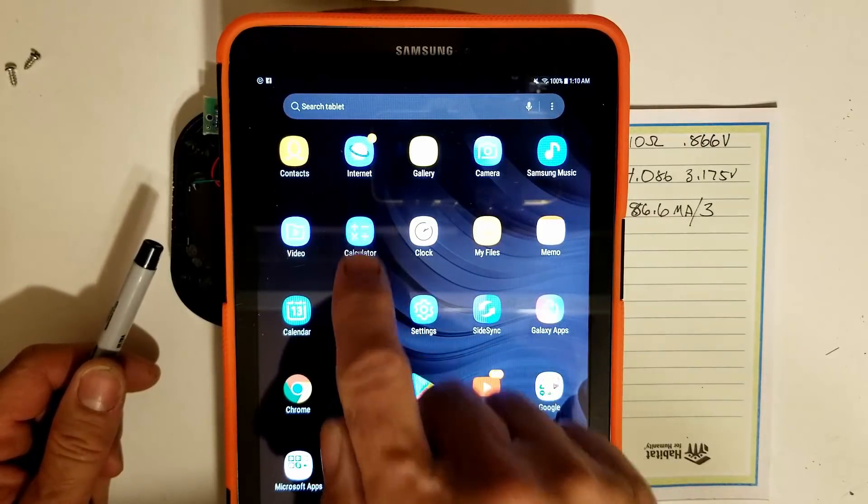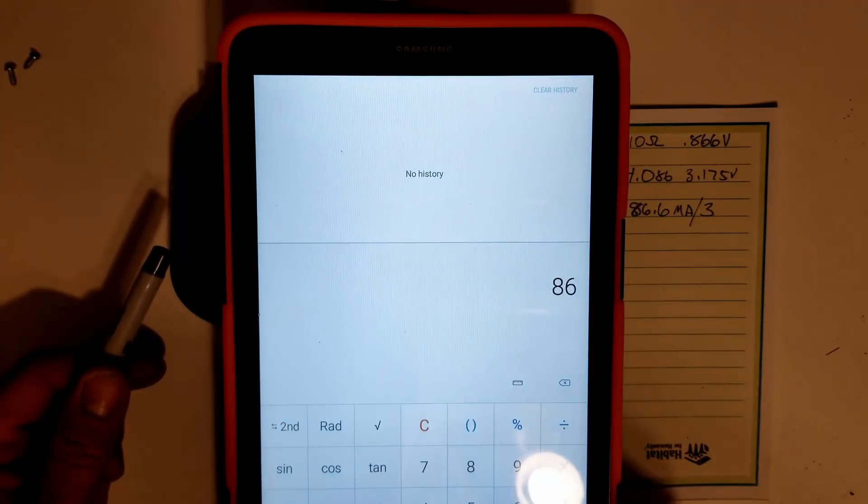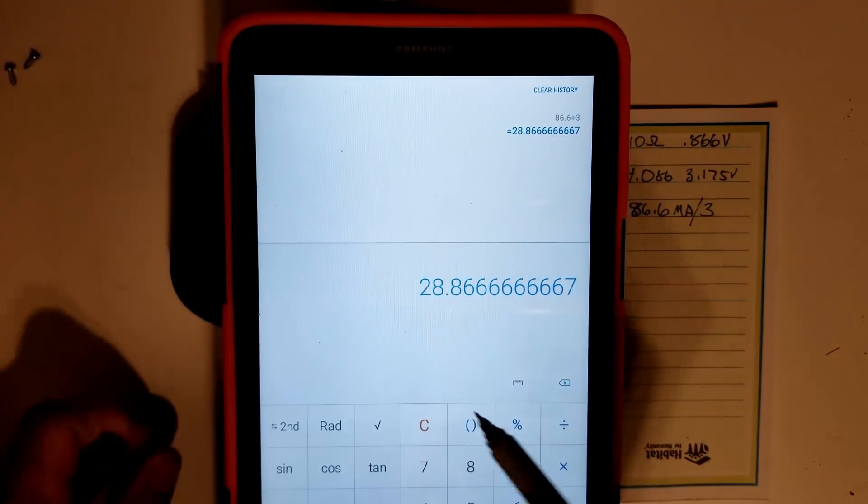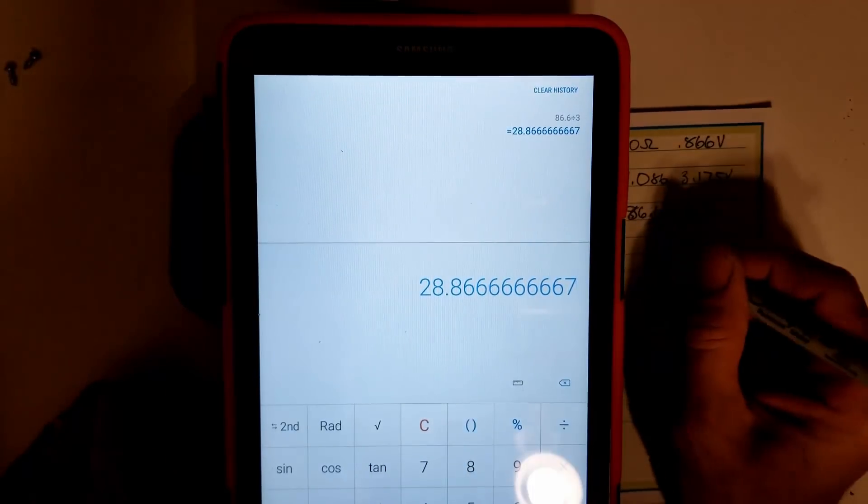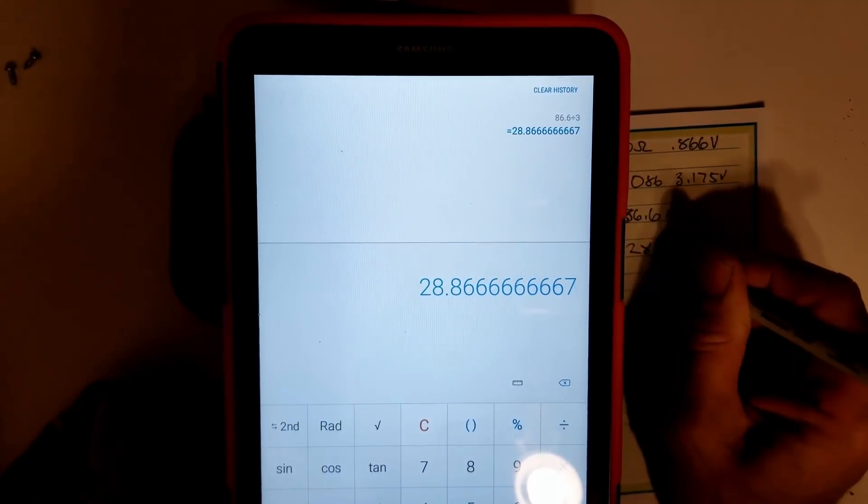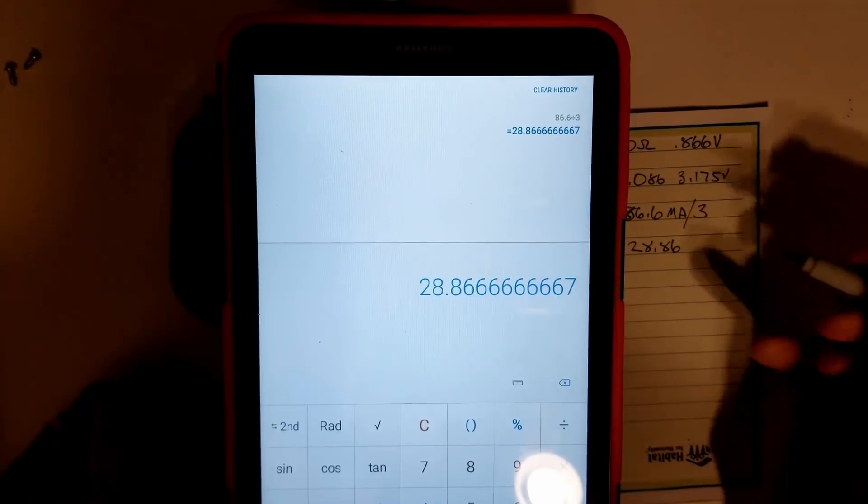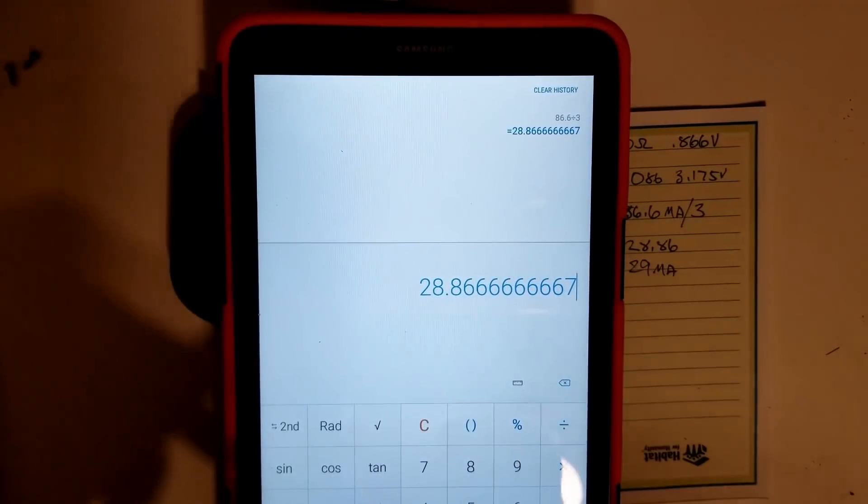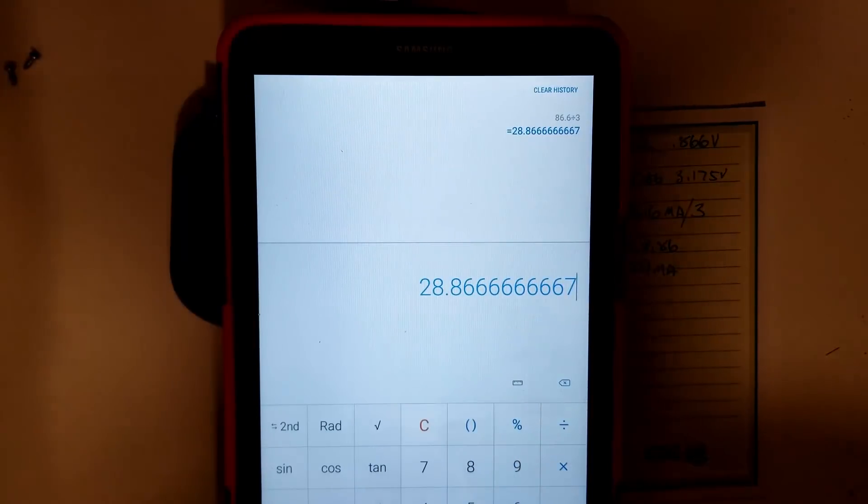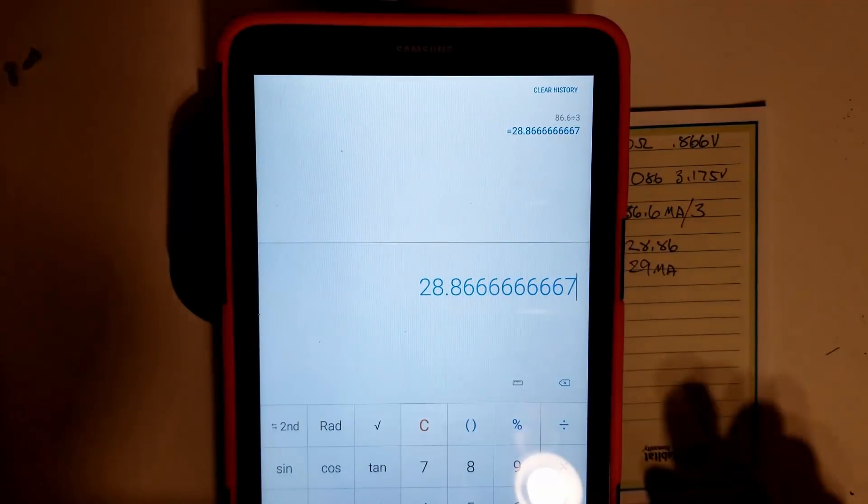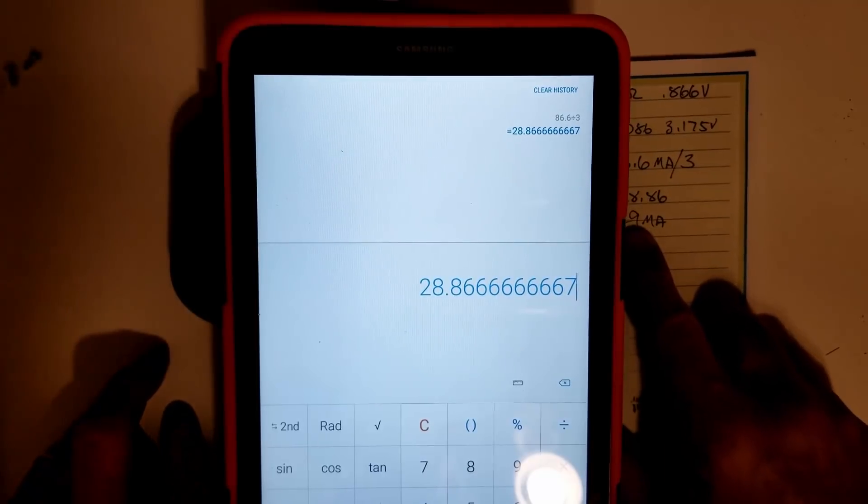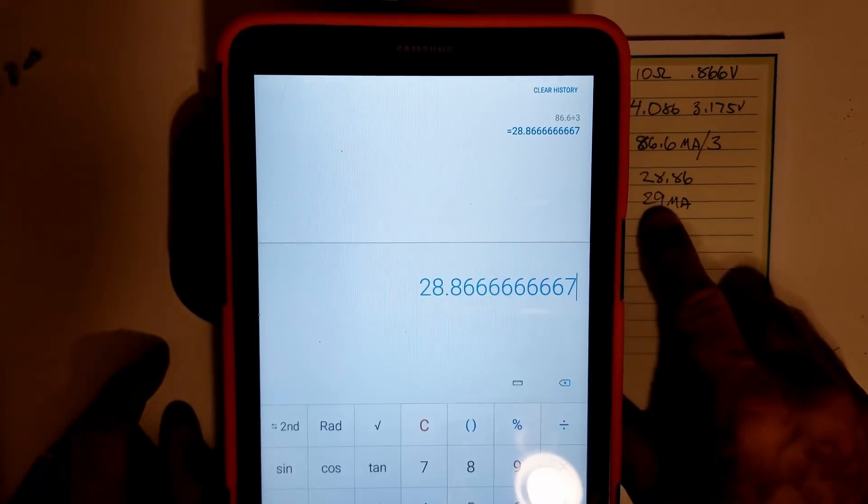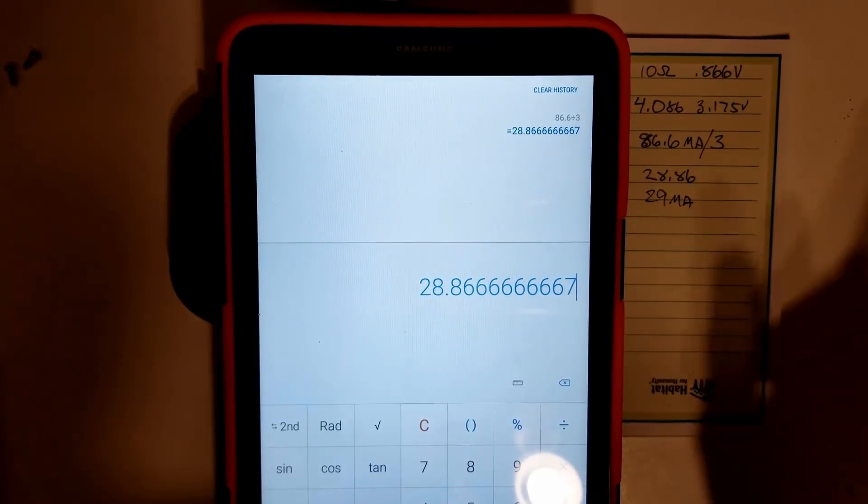So that tells me I have 0.0866, 86.6 milliamps. I'm going to go to calculator. We're going to go 86.6 divided by 3. And we see a total milliamp draw per LED of 28.86, or close to 29 milliamps per LED, which is the absolute maximum design specification. Those LEDs are spec'd at about 30 milliamps forward current. Much over that and you're going to have problems.